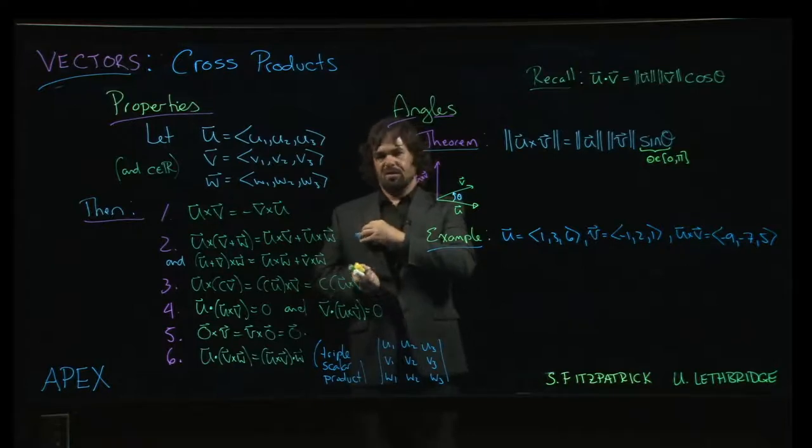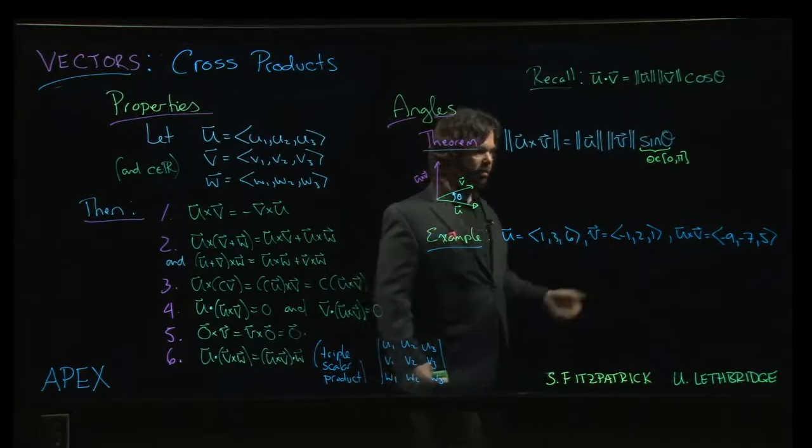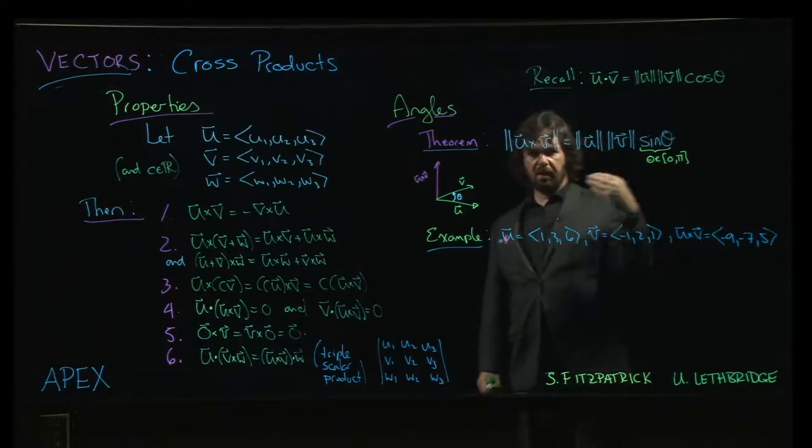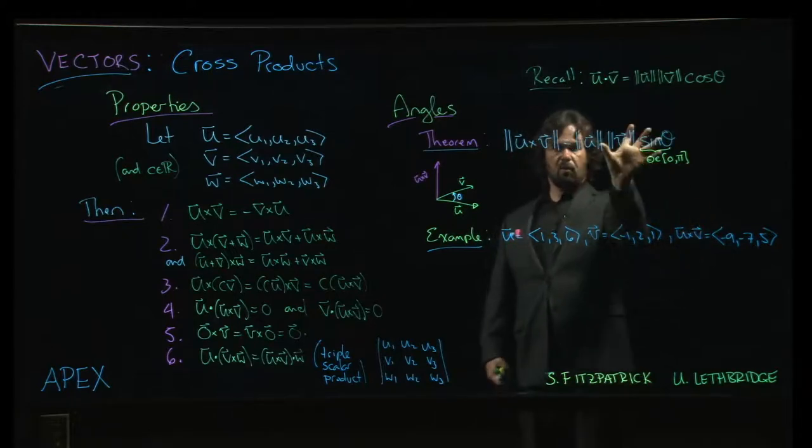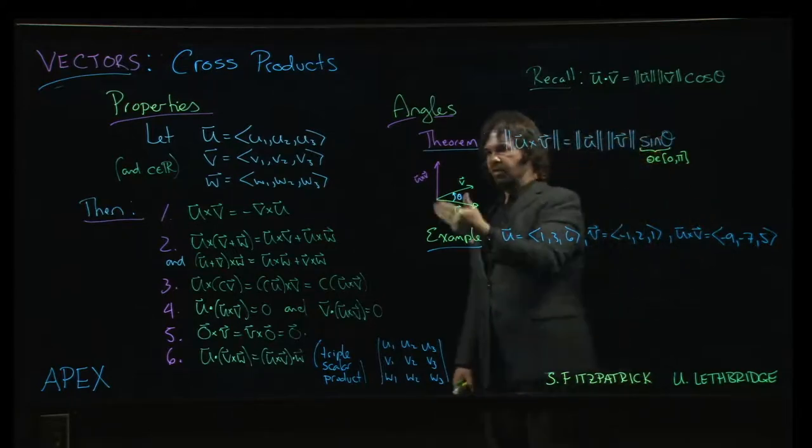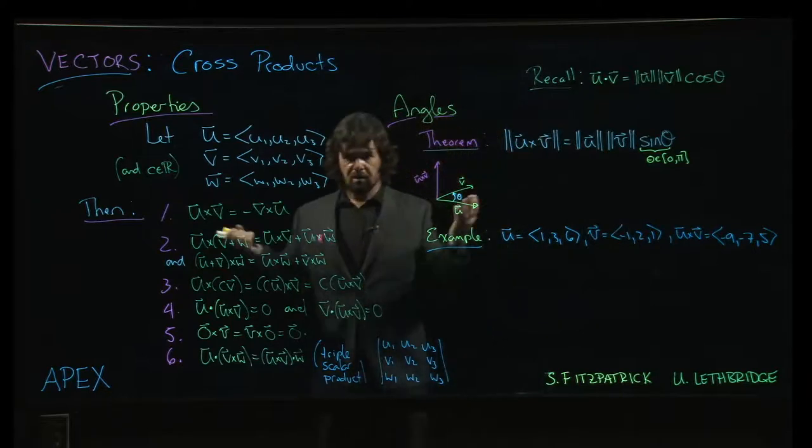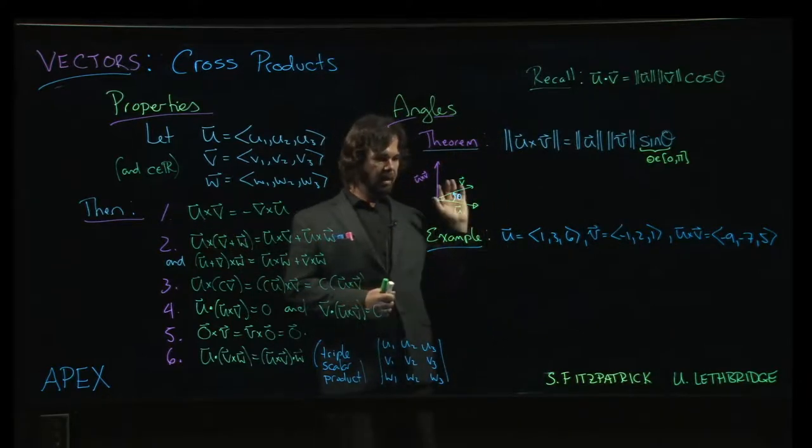And so this is, if you want, this is another way of defining the cross product. Because to define a vector, you should give a magnitude and a direction. And so this formula gives the magnitude, this right hand rule gives the direction, and there you have it.